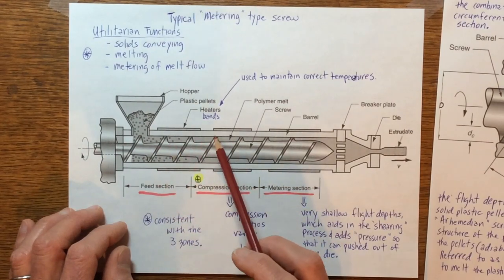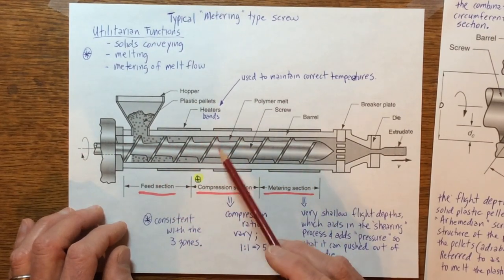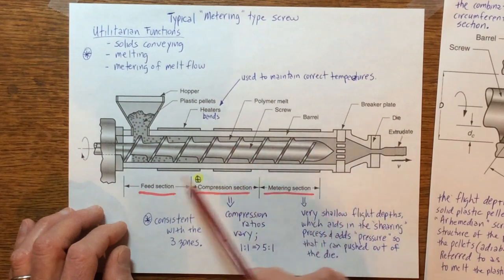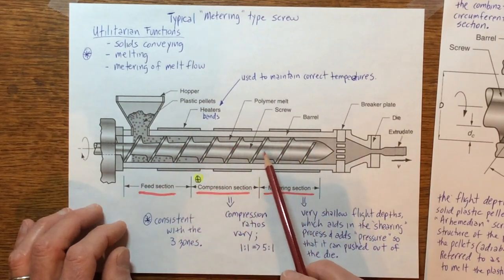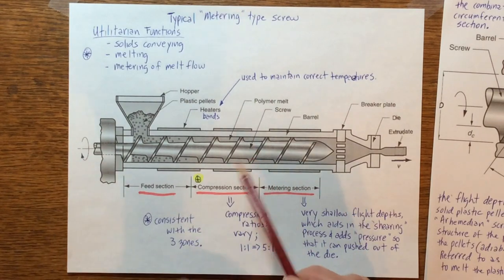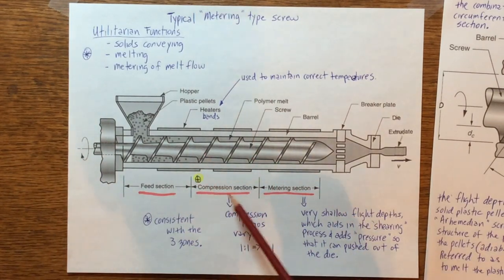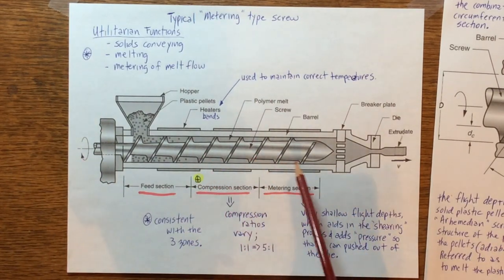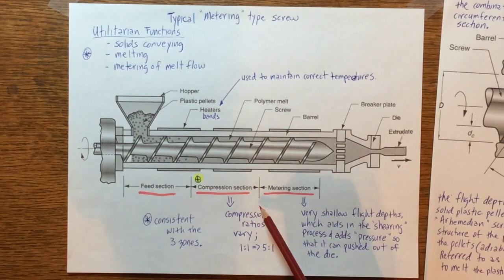The volumetric area begins to decrease. In other words, the ID of this screw is becoming larger and larger as you can see. The OD obviously doesn't change, but the ID becomes larger and larger, and that's why it's such a good depiction of this screw.